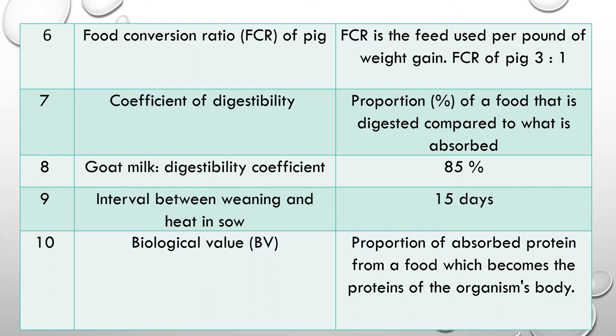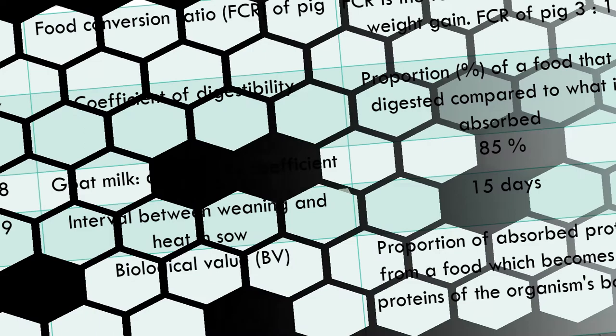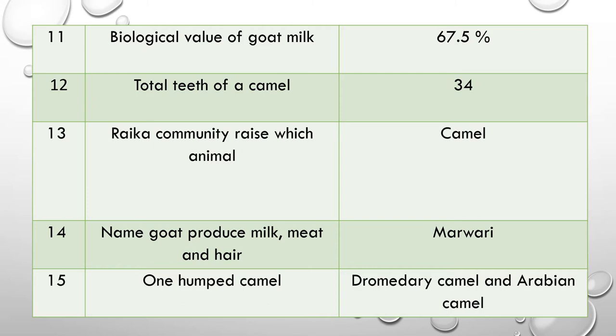Question 10: Biological value — an important question. It is the proportion of absorbed protein from a food which becomes protein of the organism's body. The biological value of goat milk is 67.5%, which is very high and very good — that's why goat milk is considered excellent.